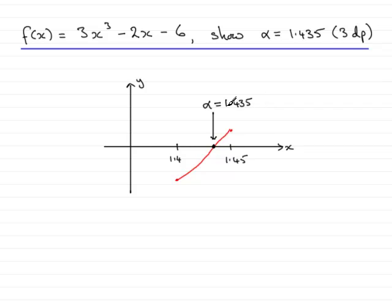But to be sure that it's 1.435 to 3 decimal places, what we need to do is take the lower bound of this value and the upper bound of this value and check that there's been a change in sign.